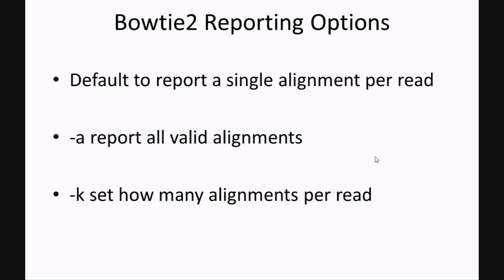And like the original Bowtie, we can control how read alignments are reported back in Bowtie 2. The default is to report a single alignment per read. However, you can have Bowtie 2 find and report all valid alignments for a given read using the -a option, or you can use the -k option to set how many alignments to find and report back per given read.